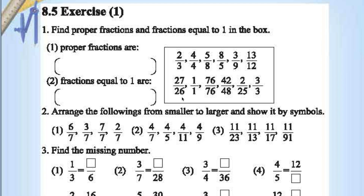Why? Because the numerator is greater than the denominator. 1 by 1 is equal to 1, so it comes under category 2. 76 by 76 is also 1, it comes under category 2. 42 by 48 is a proper fraction, but not reduced. 2 by 25 is also a proper fraction. 3 by 3 is equal to 1, it comes under category 2.